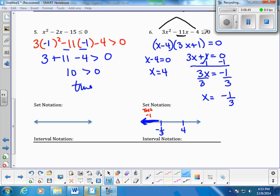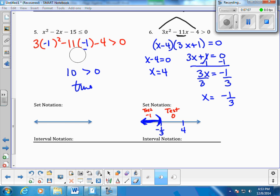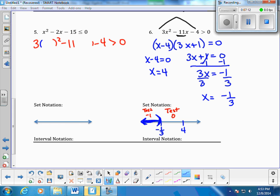Now, this does not have the equal to bar like this one did. This one gave me brackets. This one will give me parentheses. I need to test some number between a negative number and a positive number. The easiest thing is test 0. So, come back over here. I'm going to test 0. Plug a 0 in everywhere there's an x. So, you get 0 minus 0. Negative 4 is greater than 0. That is false. Since this is false, I will not shade it in.